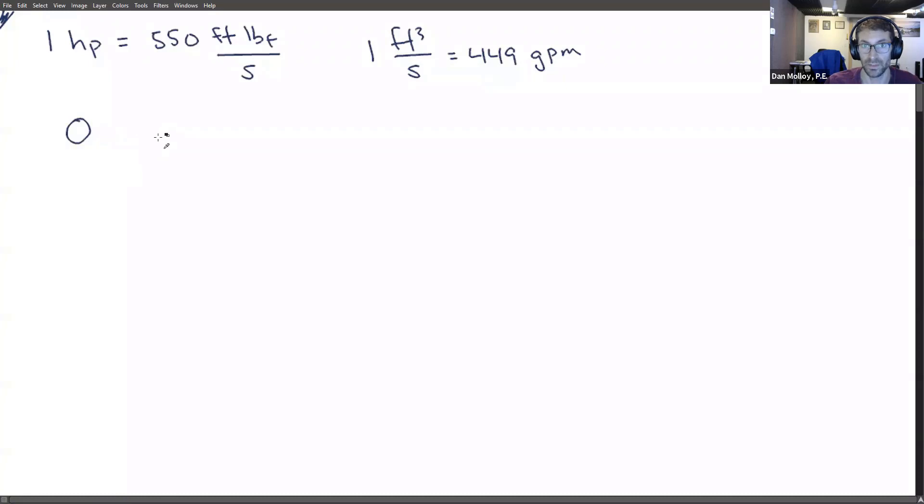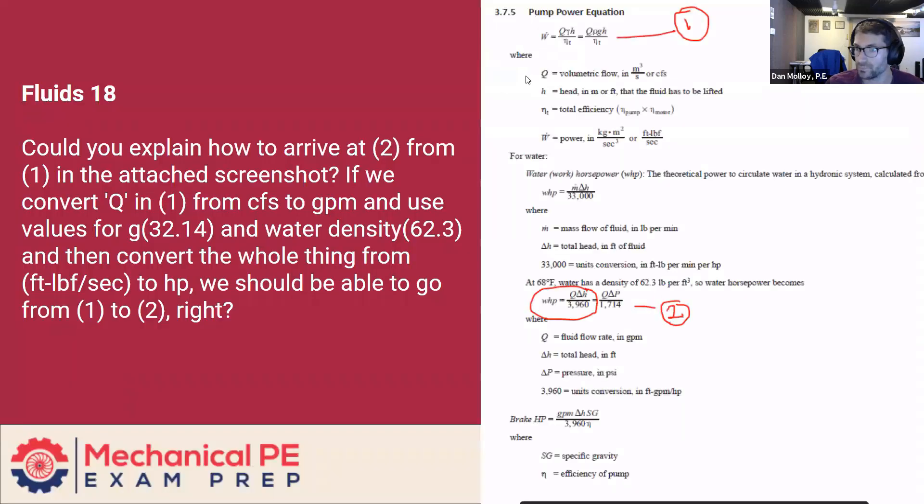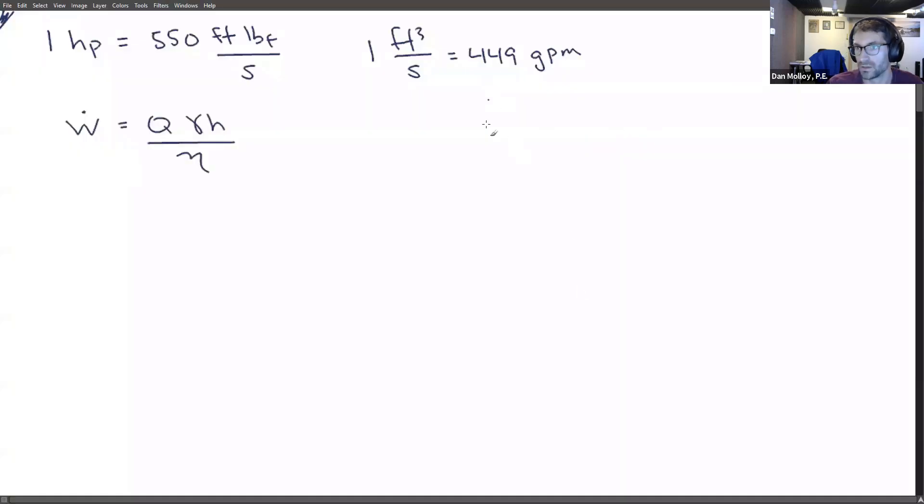I'm sorry, it's W dot equals. And we're trying to reconcile that with WHP equals Q delta H, Q gamma H over 3960. So in principle, these formulas should basically do the same thing, except for the fact that the one on the right is more made for your convenience.